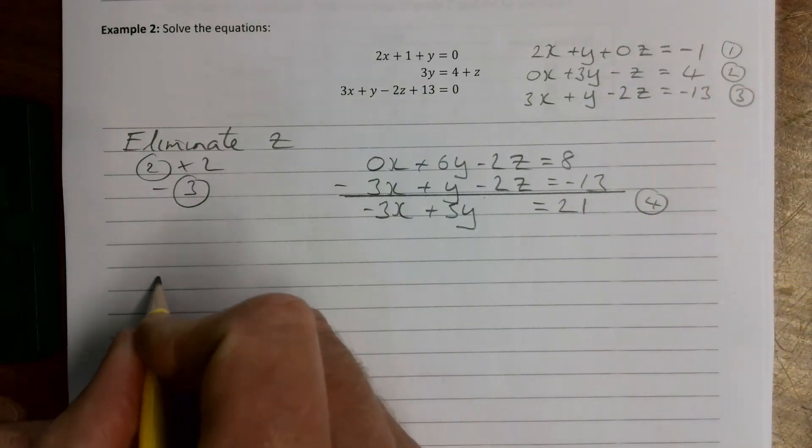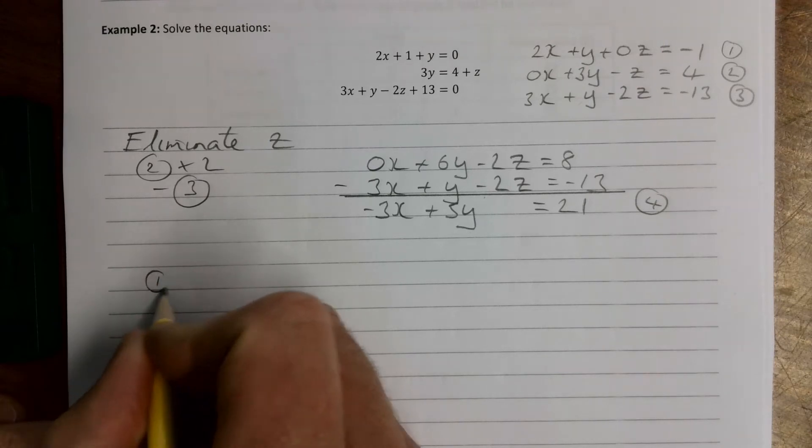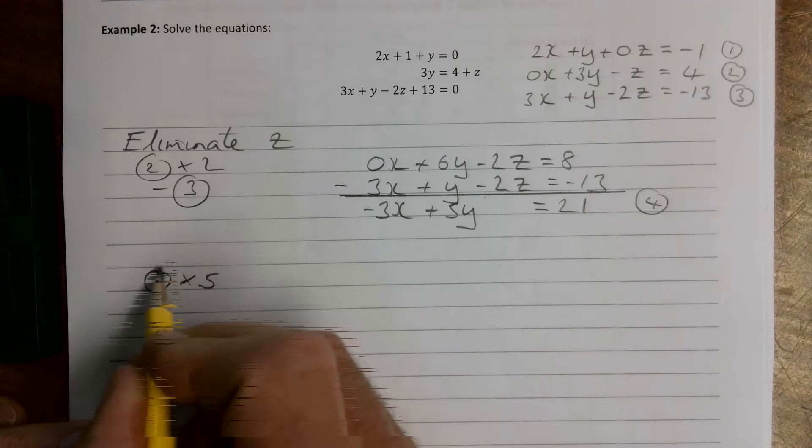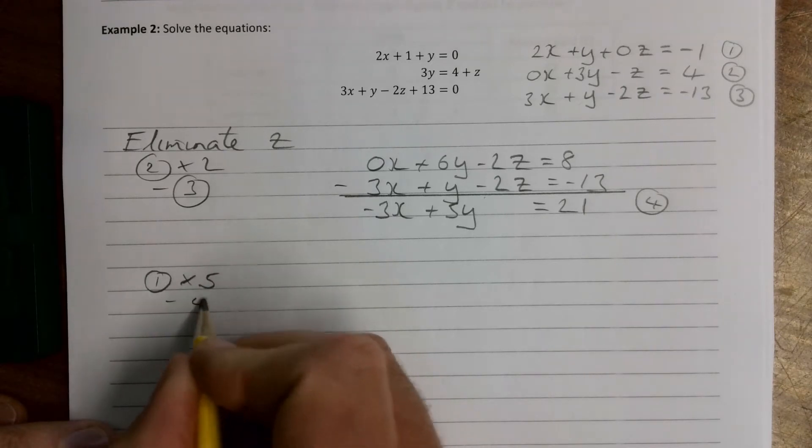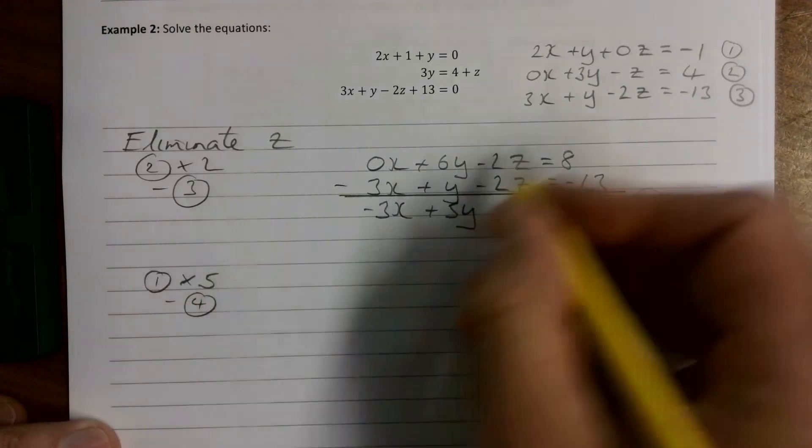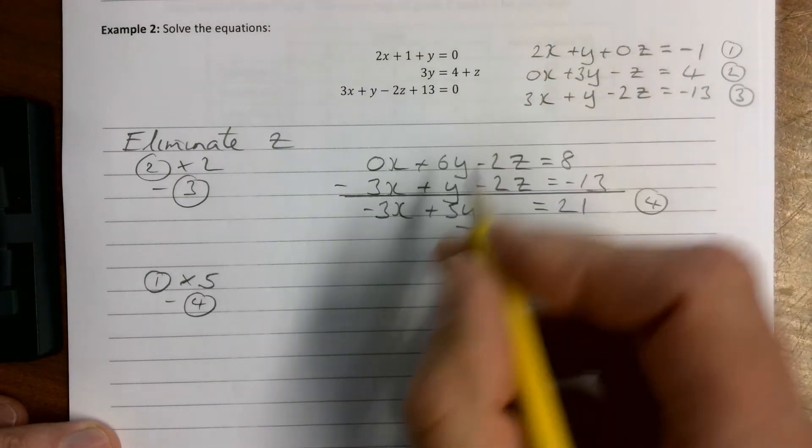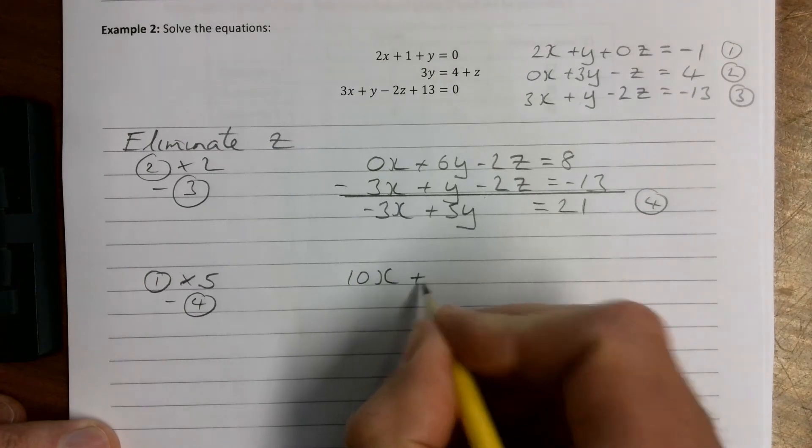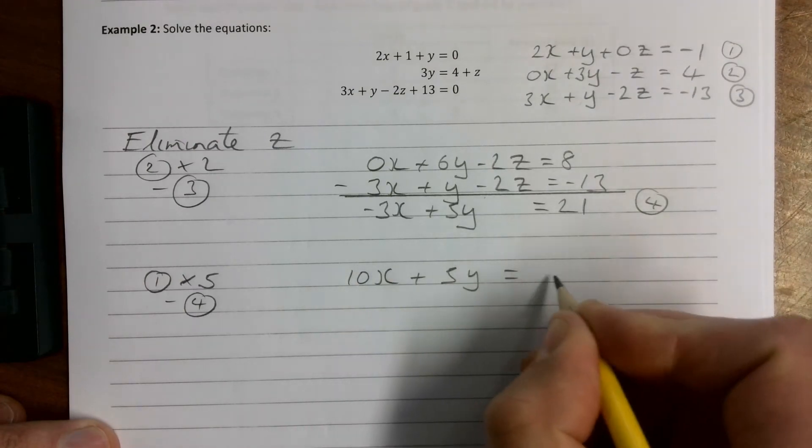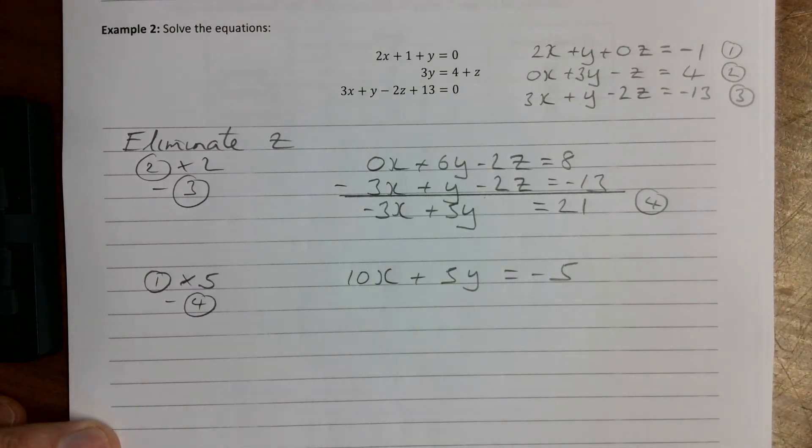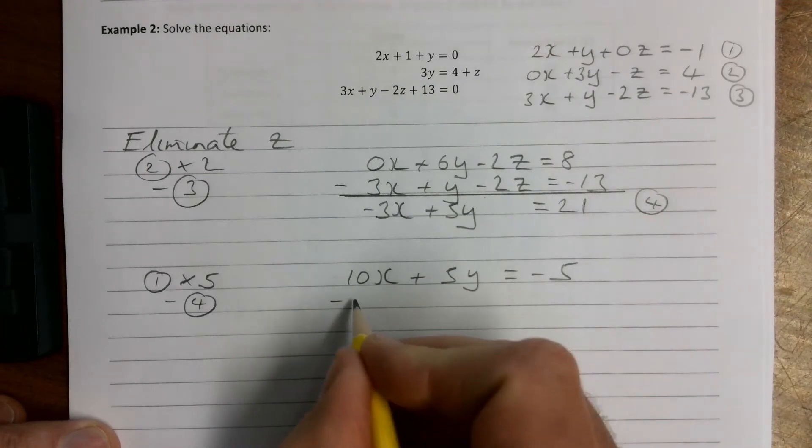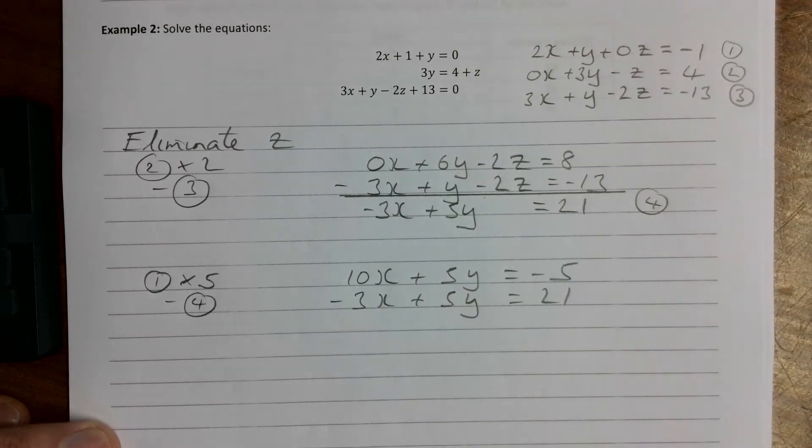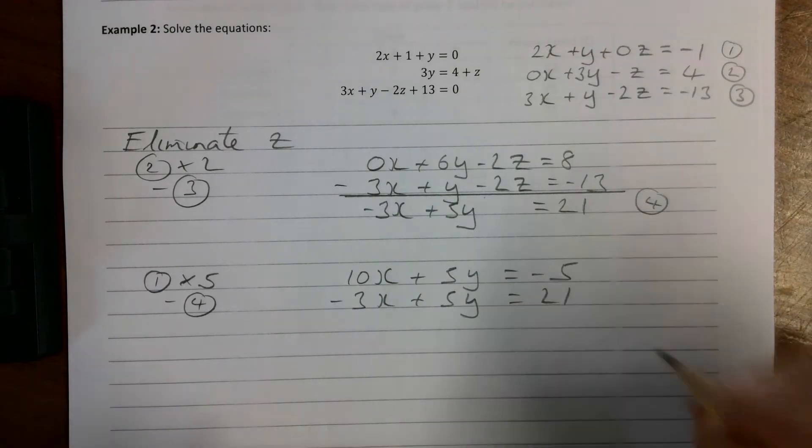Let's write down again, explaining to the examiner what you're doing is vital. 1 times 5 take away number 4. So equation 1 times 5 is going to be 10x plus 5y equals minus 5. And this one here, minus 3x plus 5y equals 21, and we're going to subtract those two.